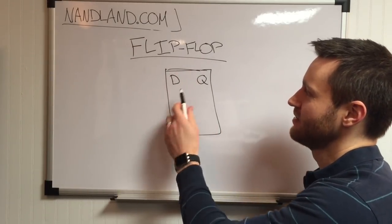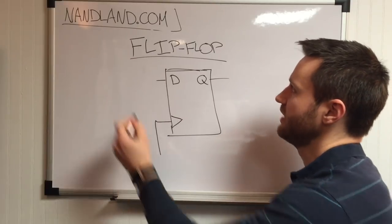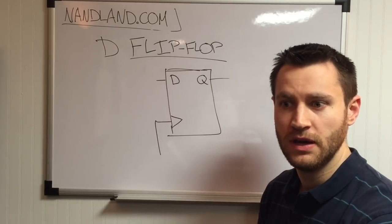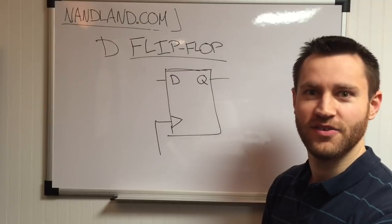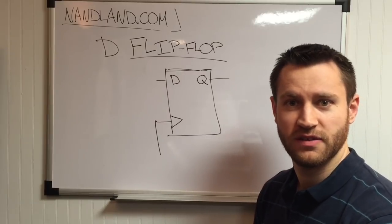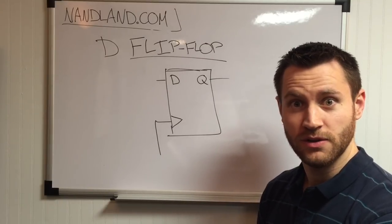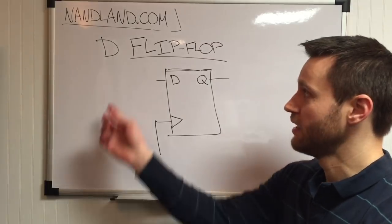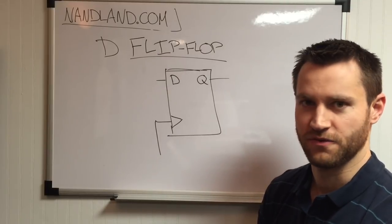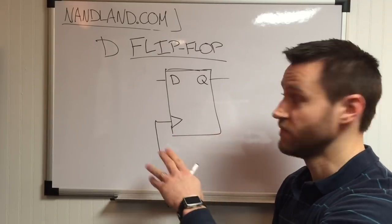A flip-flop has two inputs and one output. This right here is a D flip-flop. There are other flip-flops — there's a JK flip-flop, for example, and T flip-flops. In the real world I'd be surprised if you ever use any of them other than a D flip-flop. D flip-flops are what are inside FPGAs and are used by far the most frequently. There are other inputs to flip-flops too, but for this video I'm just going to focus on these three inputs here.